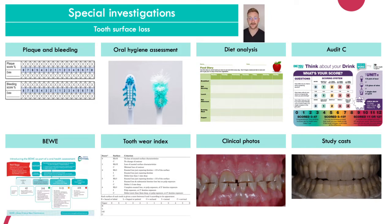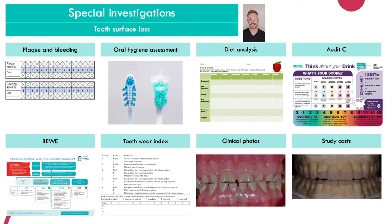Diet analysis should be done for every single patient, and in tooth wear it's especially important — you need to understand whether there's a dietary cause for erosion. A 24-hour diet recall is more accurate because the patient is less likely to misrepresent what they ate yesterday, but it may not represent a typical week. A 4-day diet diary (2 weekdays and the weekend) gives a broader picture, but patients may under-report at home. The AUDIT-C is a quick screening tool for alcohol intake, which links to both dietary erosion and intrinsic erosion from vomiting.